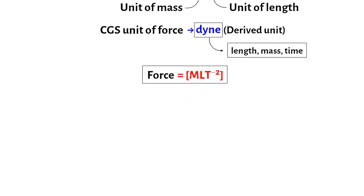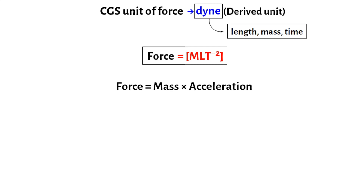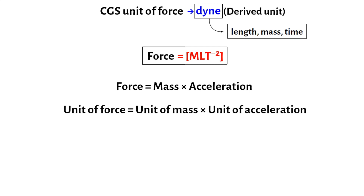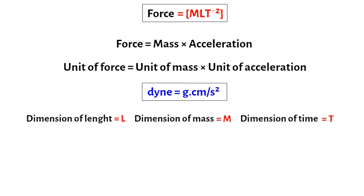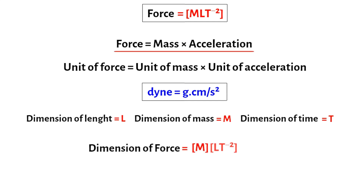From Newton's second law of motion, we know force is equal to mass into acceleration. Therefore, the unit of force is equal to the unit of mass into the unit of acceleration. That is, dyne is equal to gram into centimeter per second square. Here the relation of dyne to centimeter, gram, and second is clearly understood. Now if we take the dimension of length as L, dimension of mass as M, and dimension of time as T, then from the above relation we get the dimension of force is equal to M × LT⁻².